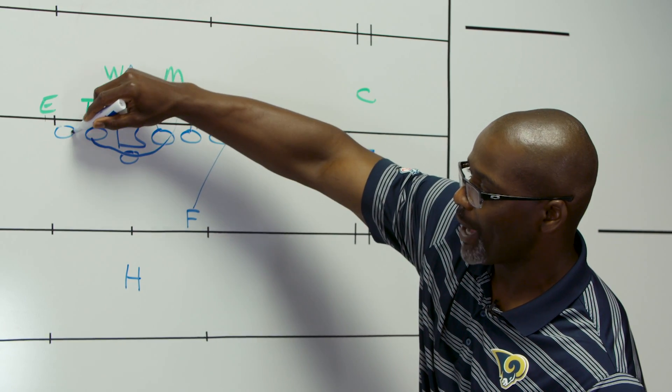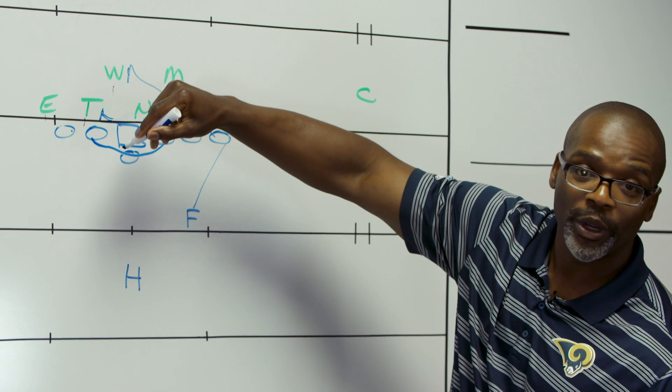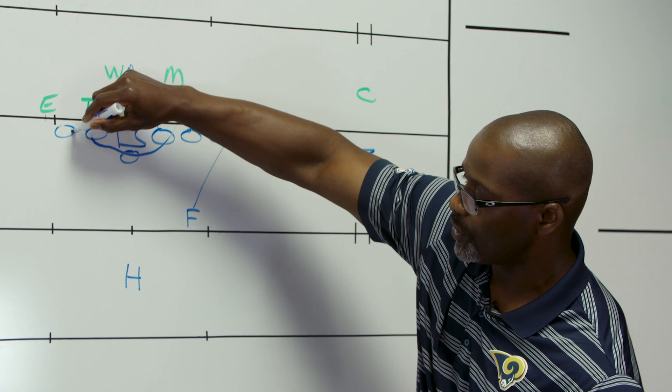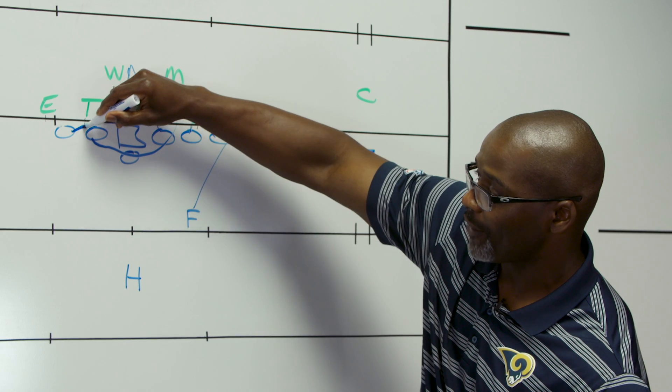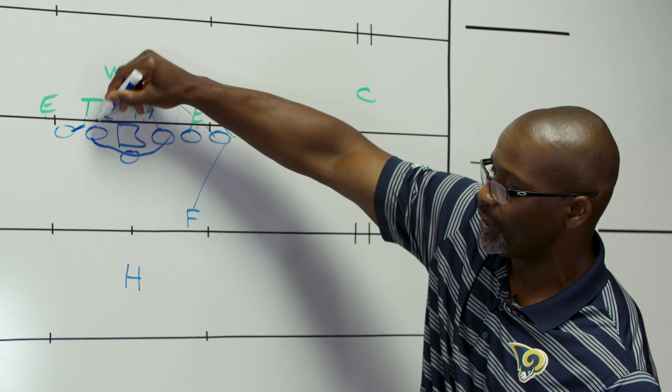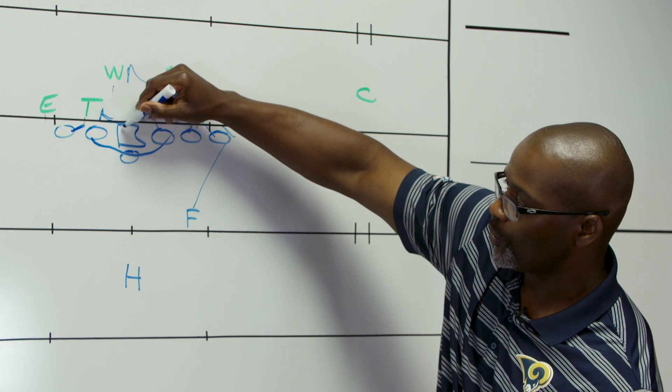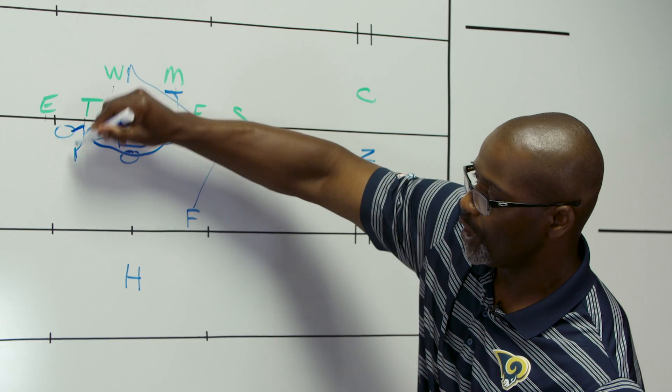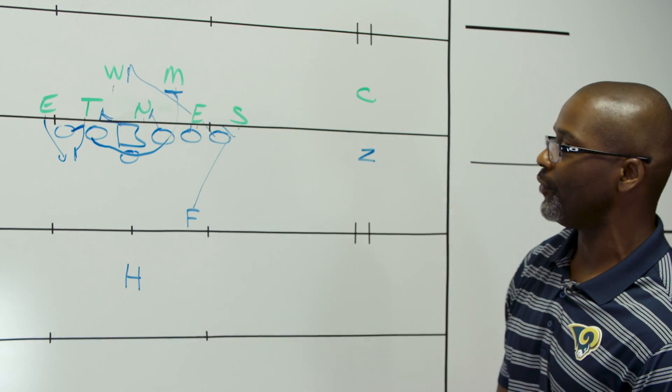And we'll take the backside tackle. He'll work what we call a hinge block. First thing he's going to do is he's going to step down, step back first initially to slow down this three technique so he can't get upfield to try to help the center. And then he'll work out to take care of that defensive end.